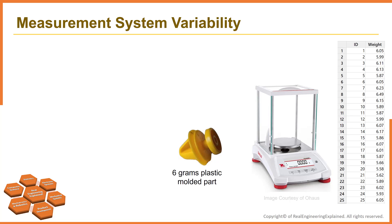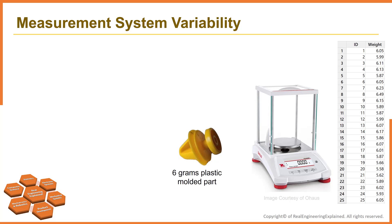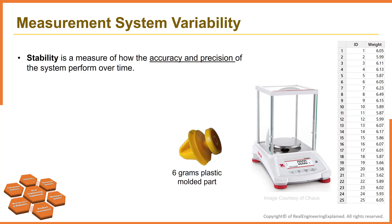What happens if the scale is not stable? Suppose the scale suddenly begins giving a result that is one milligram lighter than it should be. For example, you actually have a 6.05-gram part, but the scale reads it as 5.05 grams. Suppose this happens continuously, over and over again. You can easily see what can happen if the measurement system varies. The measurement system has to be stable — this is the key. Only then can you begin to improve the measurement system.